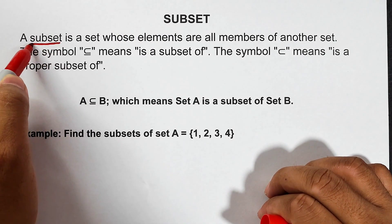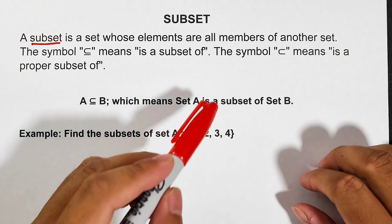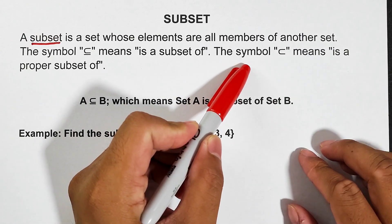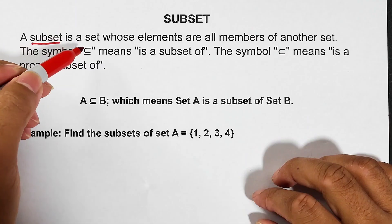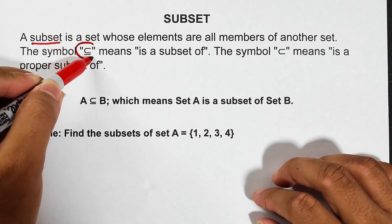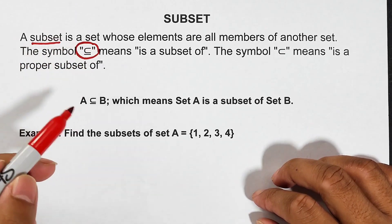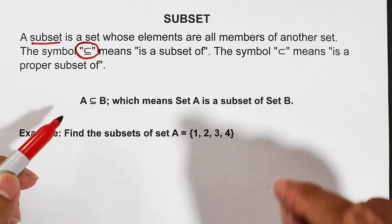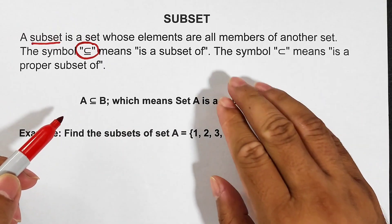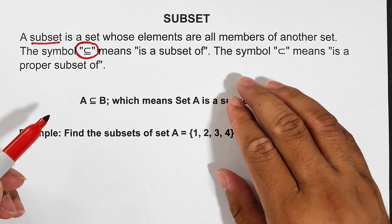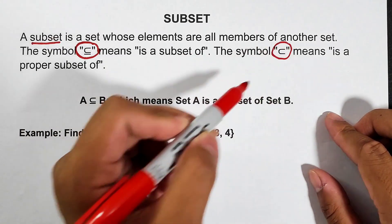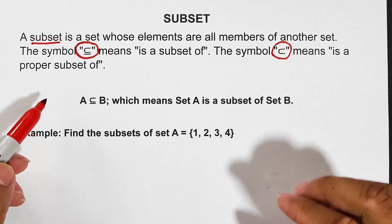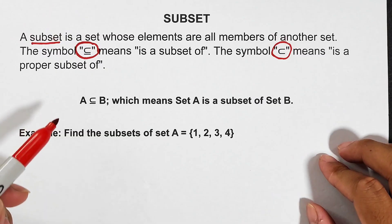Let us define first what is a subset. A subset is a set whose elements are all members of another set. Now let's go with the symbol. This symbol means is a subset of, and then another symbol this one means is a proper subset of. Later on we'll discuss that.